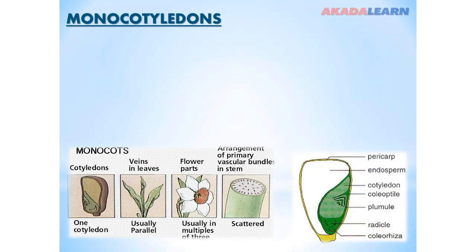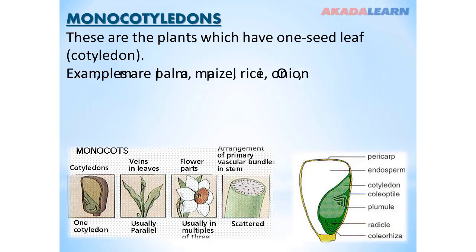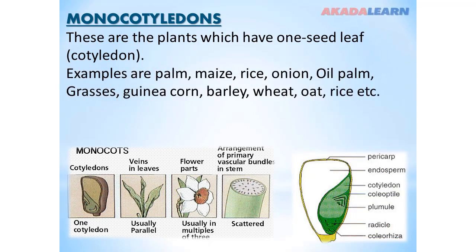Monocotyledons are plants which have one seed leaf, also known as one cotyledon. Examples of such plants are palm, maize, rice, onion, grasses, guinea corn, barley, wheat, and banana, among many more. From the picture here, we can see the characteristics of monocotyledons, which we will explain as we go further.